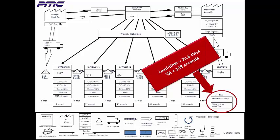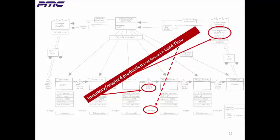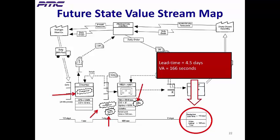This is a current state value stream map. It simply follows a product or service from beginning to end and draws a visual representation of every process in the materials and information flow. Typically, simple lean and industrial engineering principles are used to identify and eliminate waste areas. The next step is future state, which maps the ideal process after eliminating waste areas. Finally, the action plan gets the job done by focusing on who does what and by when to go from the current state to the future state.